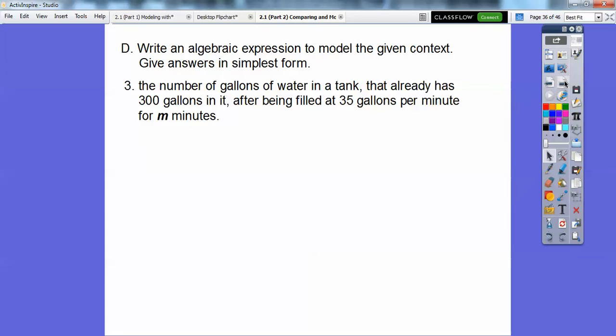Here's another one. This one's a little tricky. The number of gallons of water in a tank that already has 300 gallons in it. So it's something plus 300 because it already has 300 gallons in it. After being filled at 35 gallons per minute, per M minutes. So for 35 gallons for each M minutes would be 35M. So it's going to be the 300 plus the 35 gallons for each minute. Start it with 300 and we're going to add 35 gallons. That's a big water tank right there.